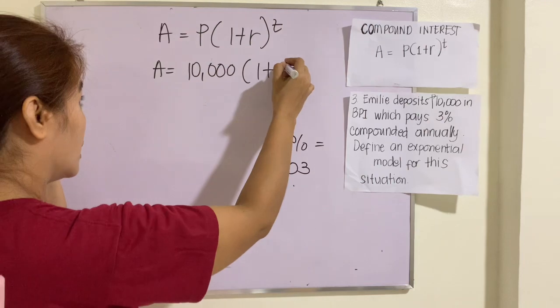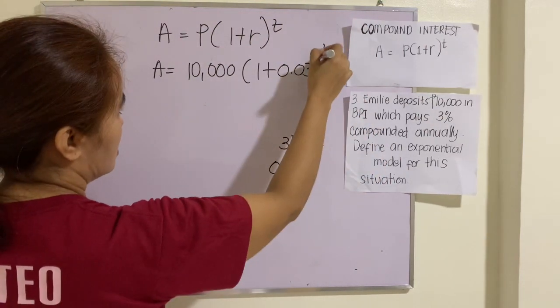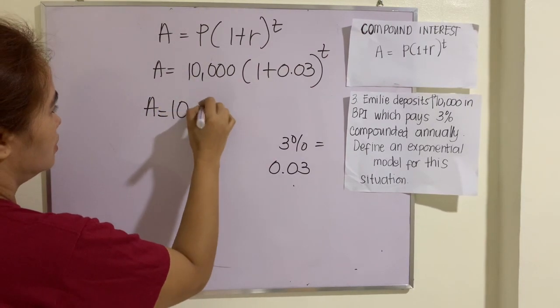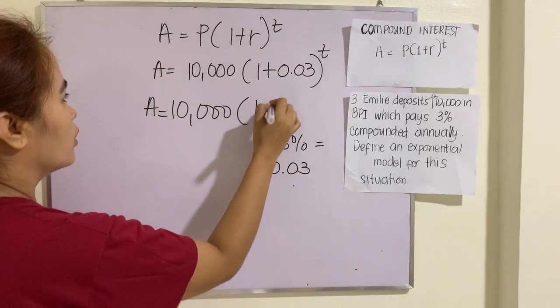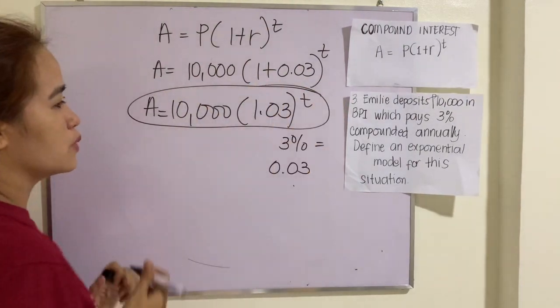So that is 0.03 raised to T. So A now is equal to 10,000 times 1.03 raised to T. So this one is the exponential model.